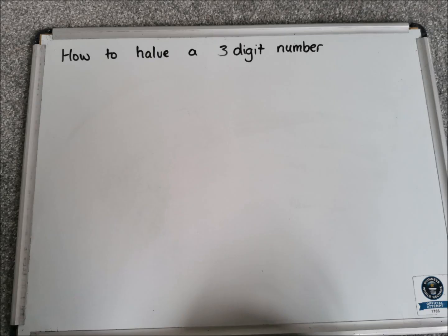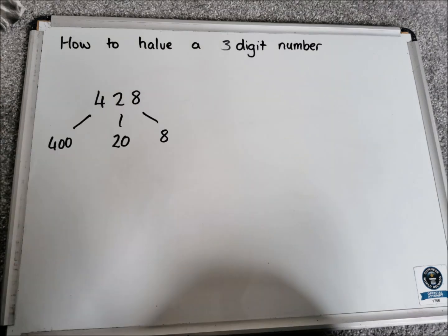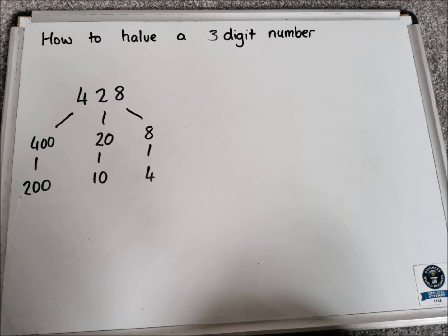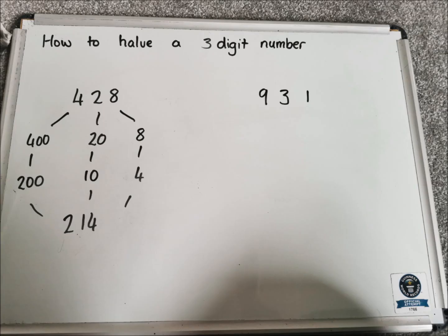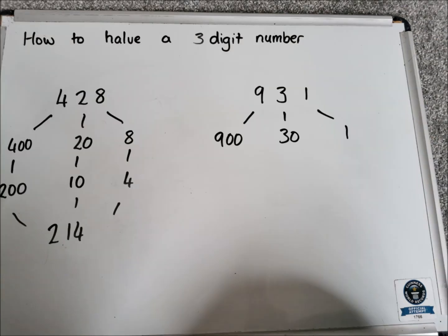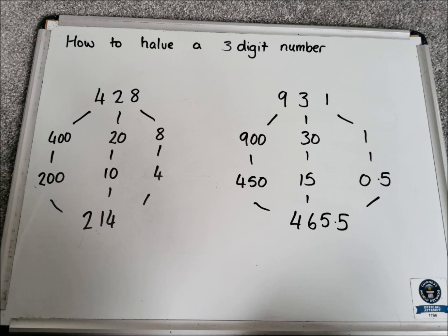Now let's look at how to half a three-digit number, following the same rules. Starting with 428: partition into 400, 20, and 8. Half of 400 is 200, half of 20 is 10, and half of 8 is 4. Bringing those parts together gives 214. For the harder example of 931: partition into 900, 30, and 1. Half of 900 is 450, half of 30 is 15, and half of 1 is 0.5. Bringing those together gives 465.5.